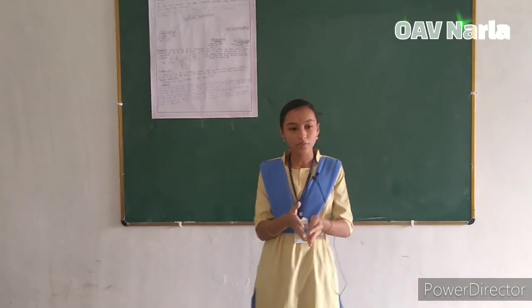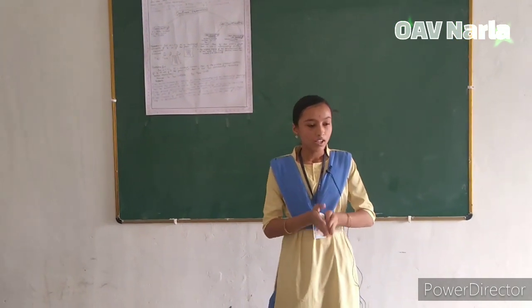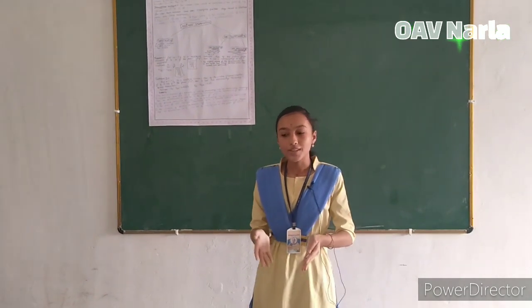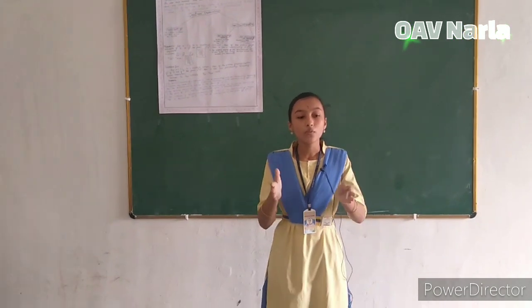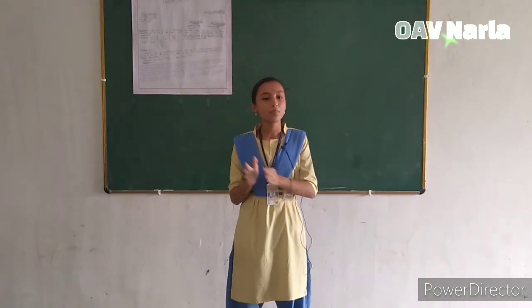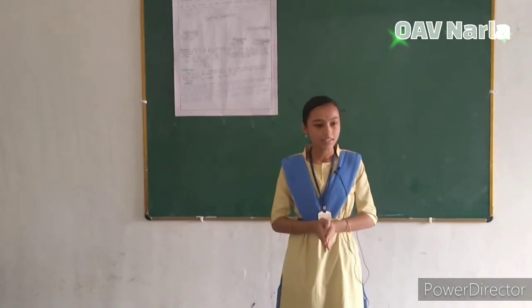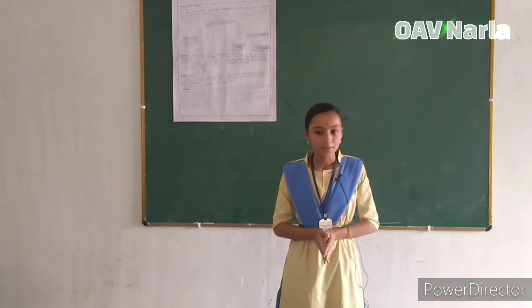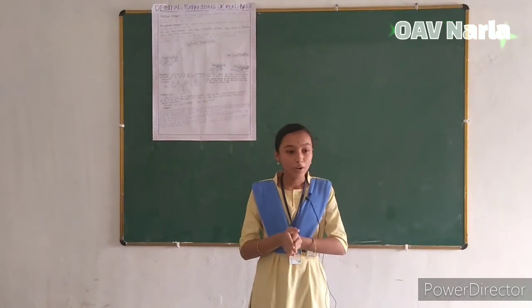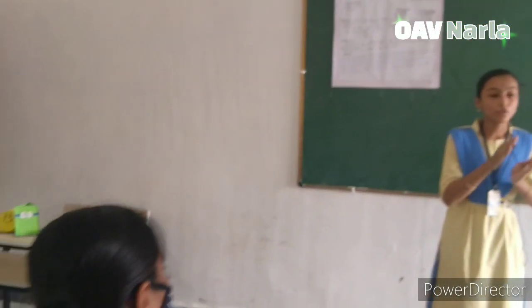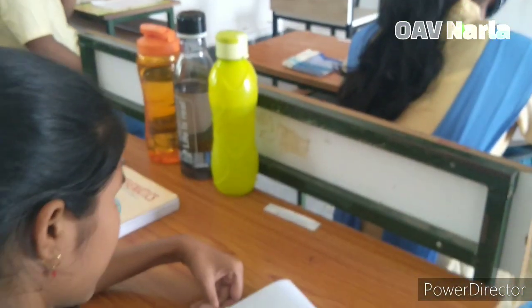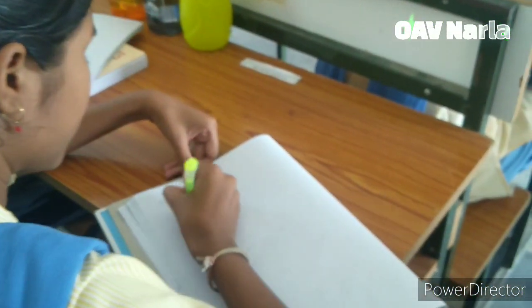Let us understand this in a better way with some examples. We have 13 upon 125 as our first example. Open your copies and do the prime factorization of 125. You will get 5 to the power 3, or 5 cubed, right? It is already in the form of 5^n. We just need to write it in the form of 2^n × 5^n. So we can write 13 upon 125 as...